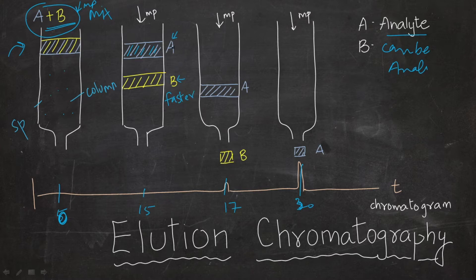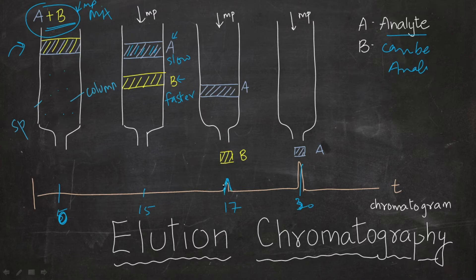B is fast and A is slower. This happens because A and B have different affinity to the mobile phase — their attraction to the mobile phase is different. B is more attracted to the mobile phase, so it moves faster. A and B are separating. At time t equal to 17, we see a peak for B — B has exited the column, while A is still inside the column.